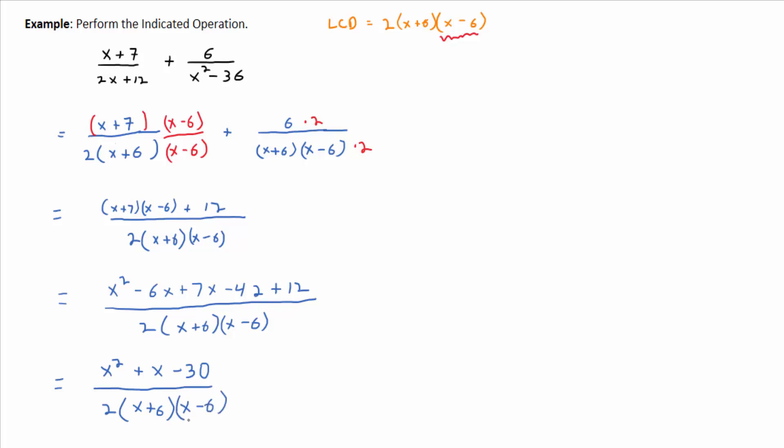And the denominator is 2 times x plus 6 times x minus 6. Now, in the other examples we were done at this point, and it was pretty obvious we were done. But here, is it obvious that we're finished, that it's simplified all the way? No, because you look at the numerator and maybe it contains a factor of x plus 6 or x minus 6. So you've got to simplify. You've got to factor the numerator if possible and see if it contains any common factors with the denominator.